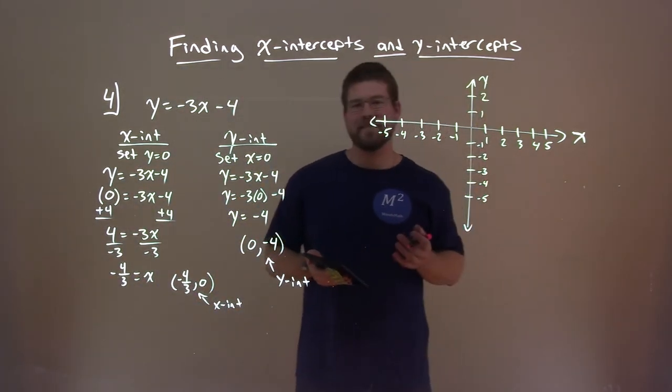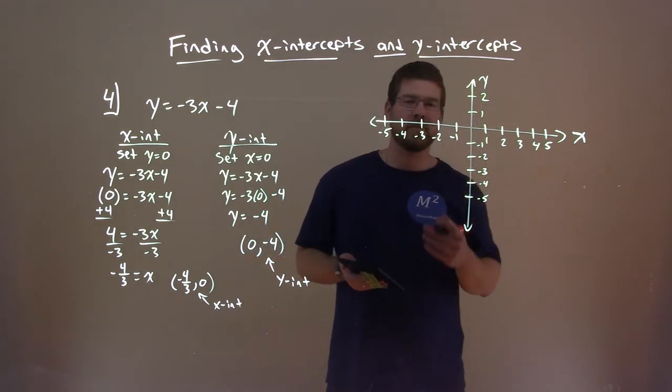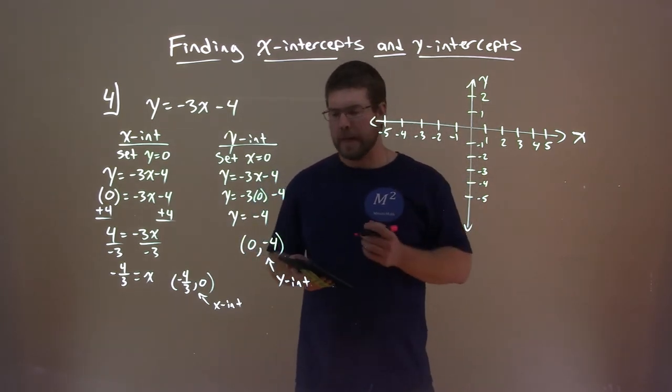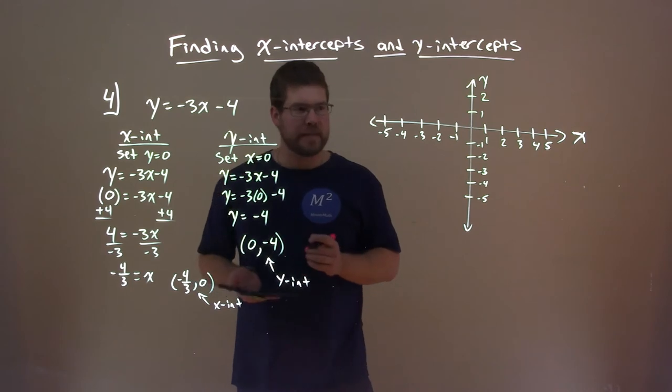So, now we have our graph here. Again, a little off, but I don't have graph paper, so it's all freehand. And we want to plot our two intercepts.